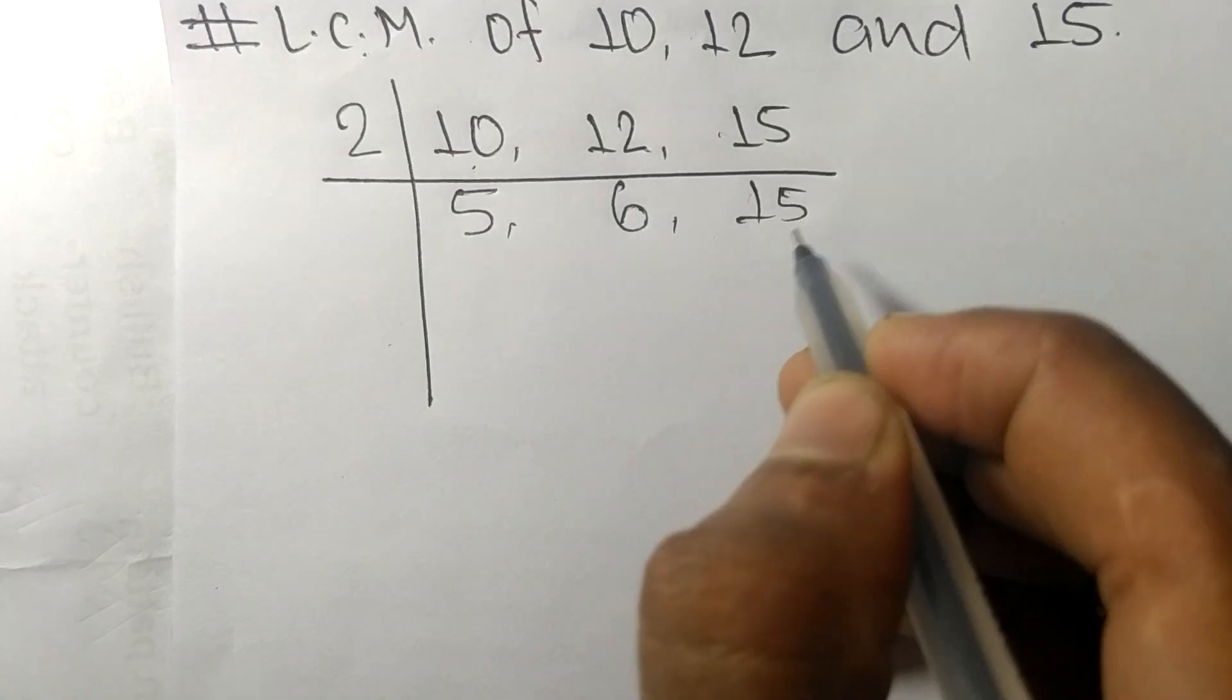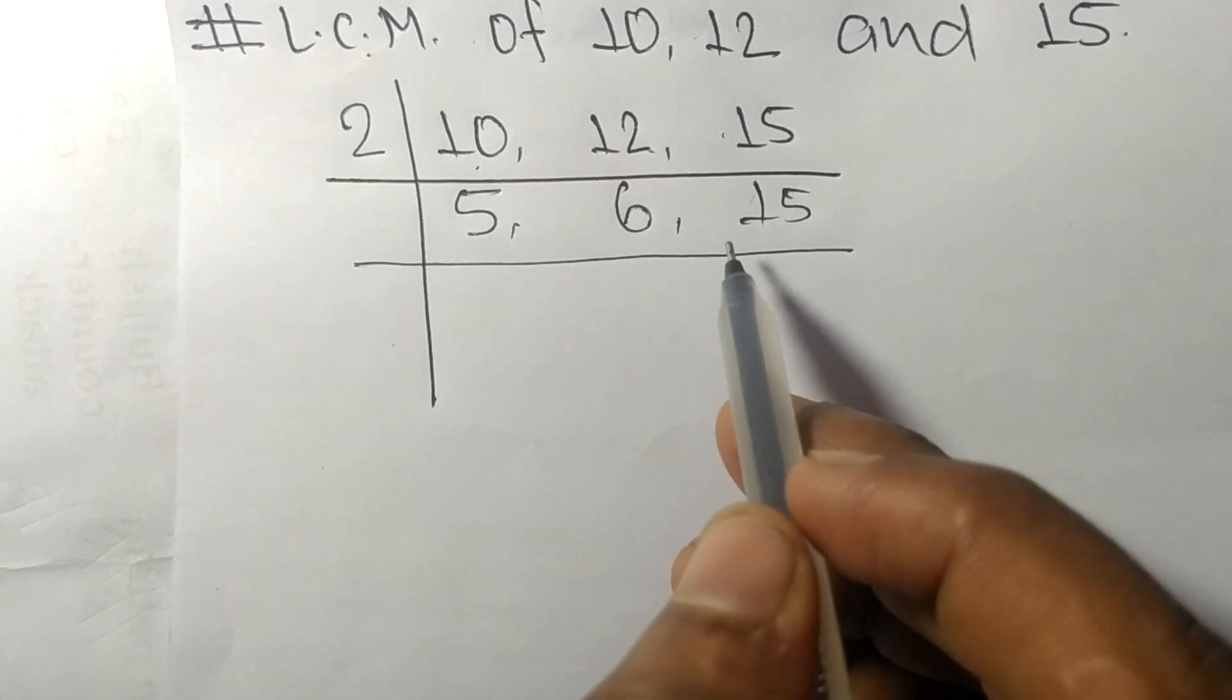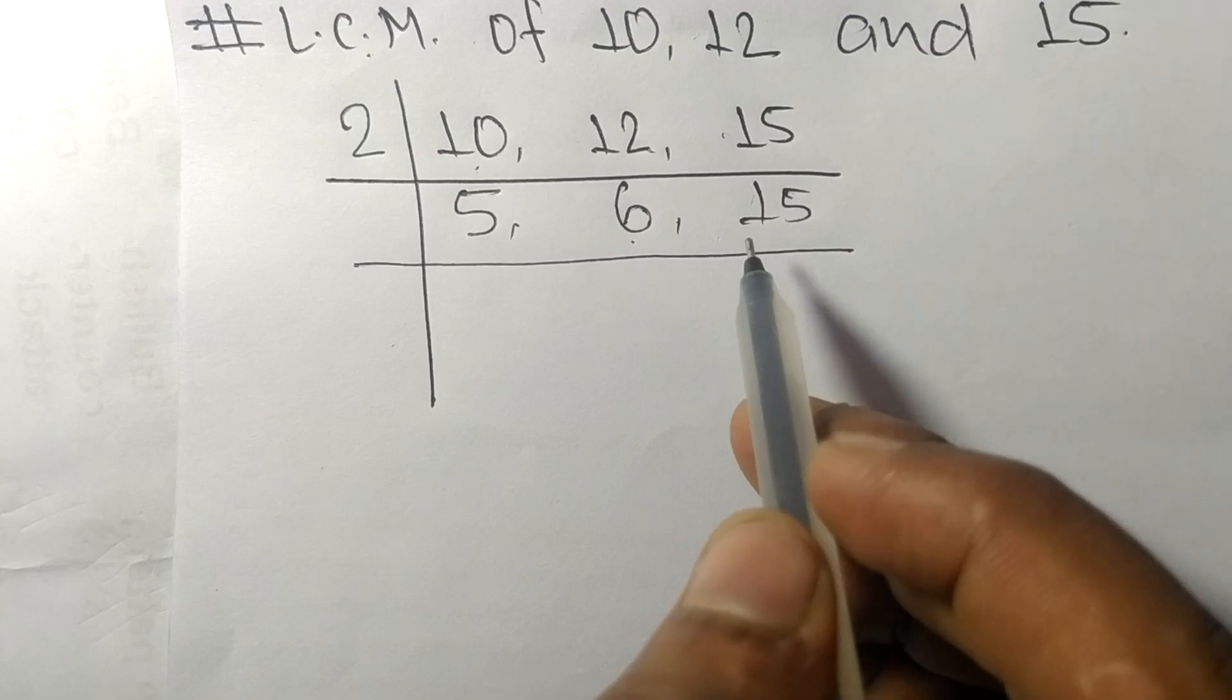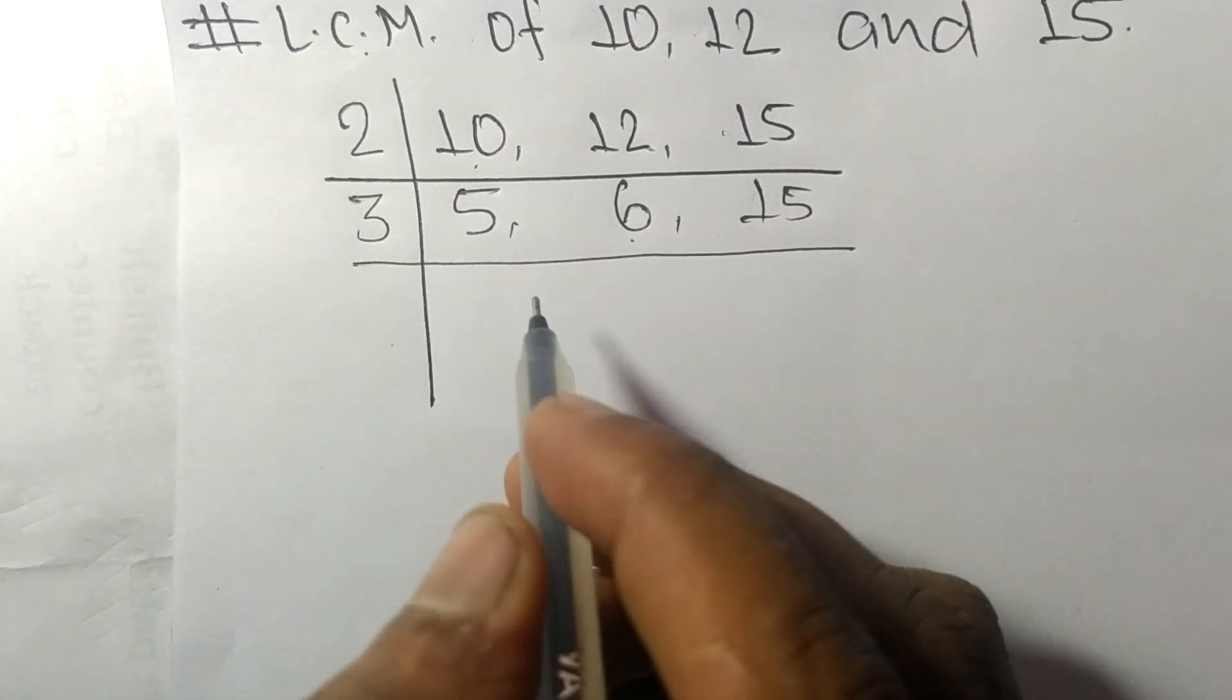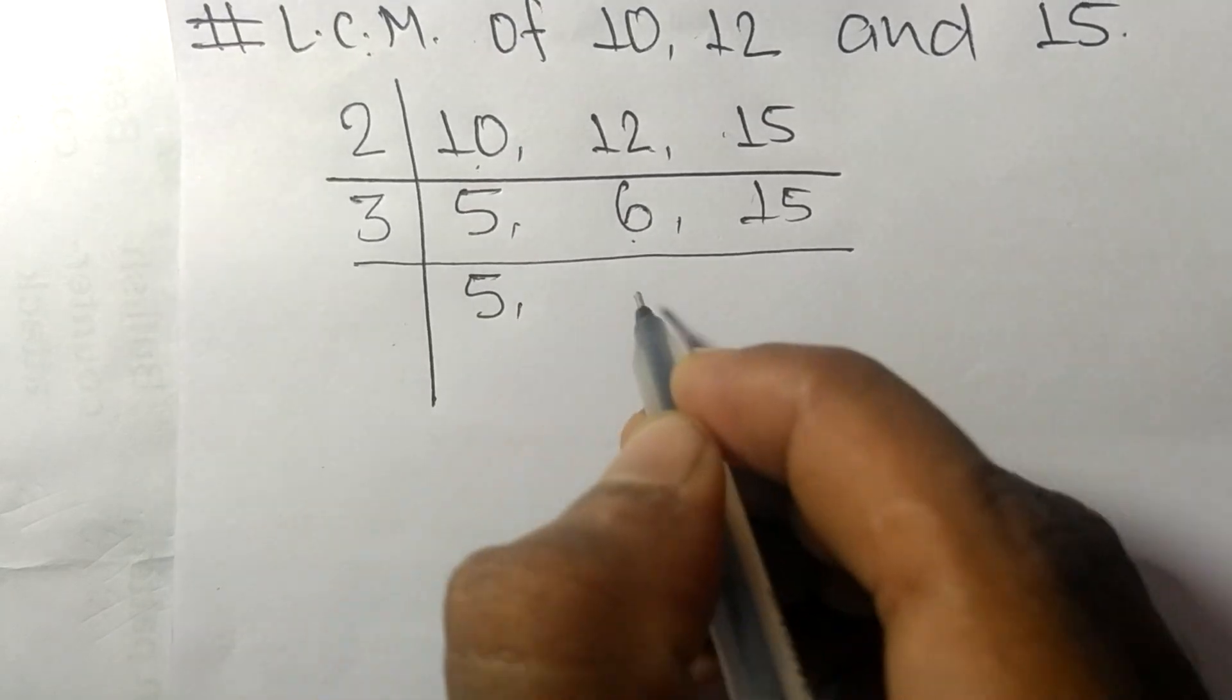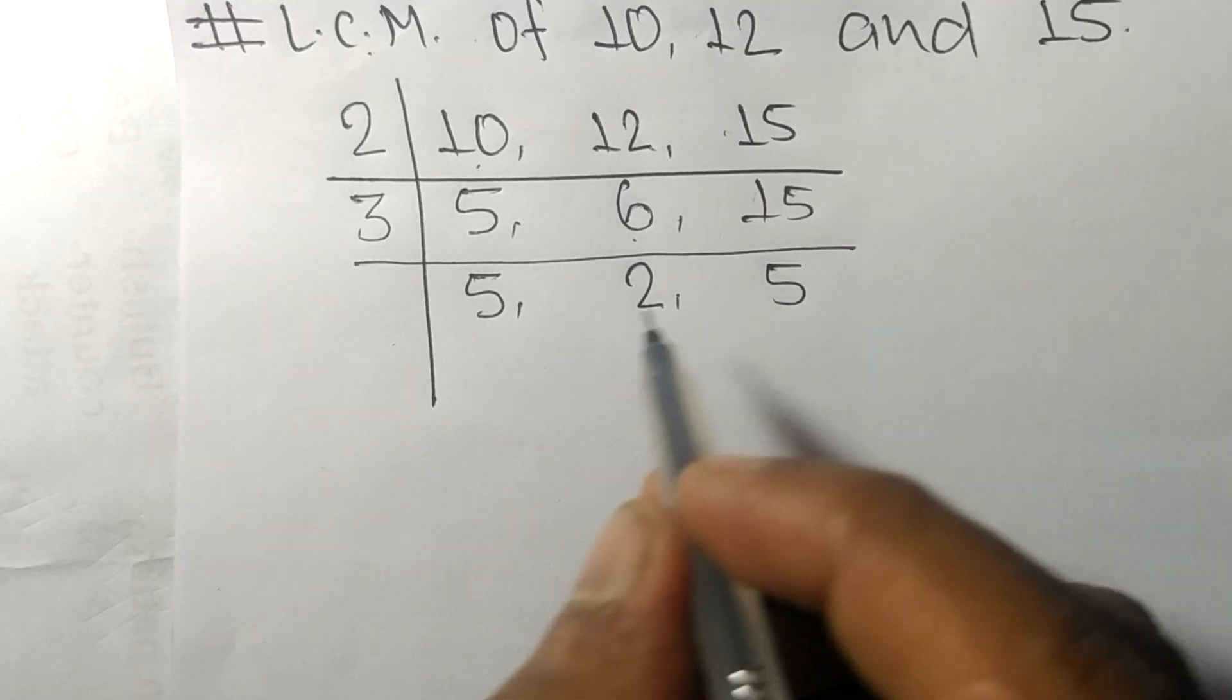Among them, 6 and 15 are exactly divisible by 3. 5 is not divisible, so it remains the same. 3 times 2 means 6, 3 times 5 means 15.